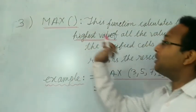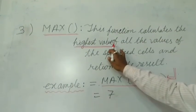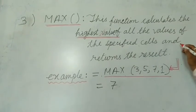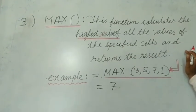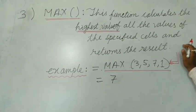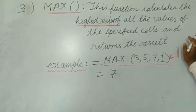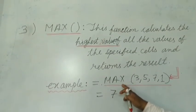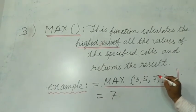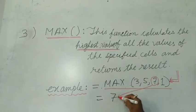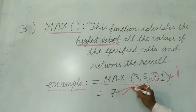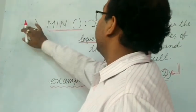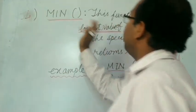Next is the MAX function. This function calculates the highest value of all the values of the specified cells and returns the result. In a range — either a row or a column — whichever is the highest value will be displayed. Example: =MAX(3, 5, 7, 1) — among these, the highest number is 7, which is displayed.